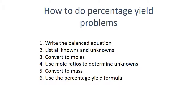In the exam, you're going to have to learn how to do percentage yield problems. What you have to do is: write a balanced equation, list all the knowns and unknowns, convert to moles, use mole ratios to determine the unknowns, convert to a mass, and then use the percentage yield formula. Those are the six steps to get 100% in these kinds of questions.